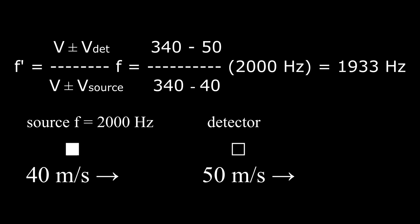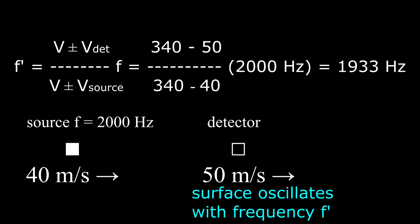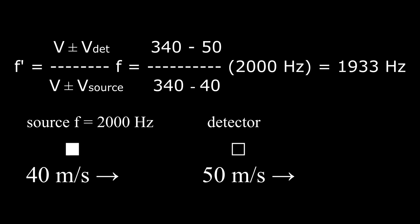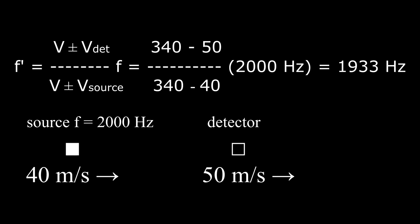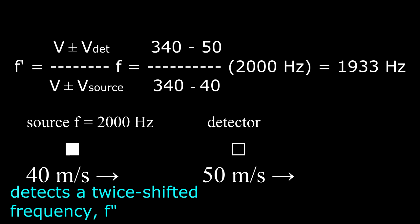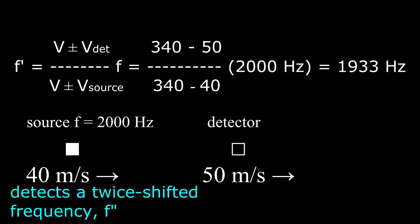For one last point: when the sound waves from a source encounter the material of the detector, say the surface of a car, that surface is made to oscillate with the Doppler shifted frequency f prime. The oscillating surface, in turn, radiates its own sound — now it is acting as the source. The original source detects a return frequency that has been twice shifted, which you might write as f double prime, but now the roles of source and detector have been swapped.